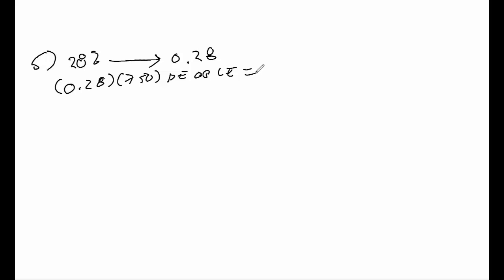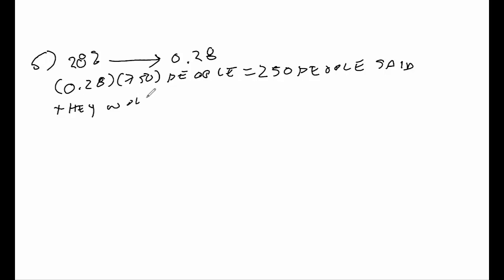When you multiply 0.28 times 750, you get 210 people. It's very important that you write the units — 'people' — otherwise one has no idea what you're talking about. So 210 people said they would vote Democrat, and that would be the answer to this question.